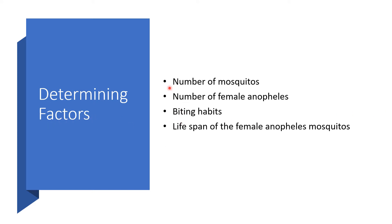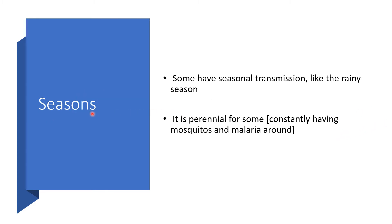Determinant factors: for us to be able to say that there would be malaria in a zone or not, it must be a factor of the number of mosquitoes — particularly the number of female Anopheles mosquitoes — the biting habits, and the lifespan of the female Anopheles mosquitoes. Regarding seasons, some regions have seasonal transmission, very common during the rainy season, and in some regions it is perennial — meaning mosquitoes will be there throughout the year.